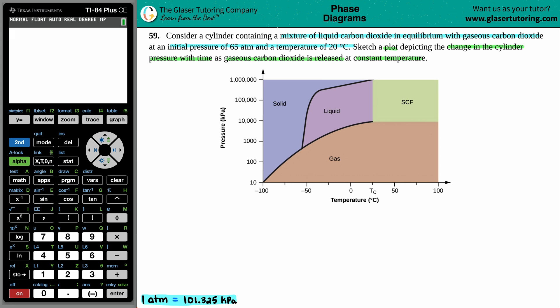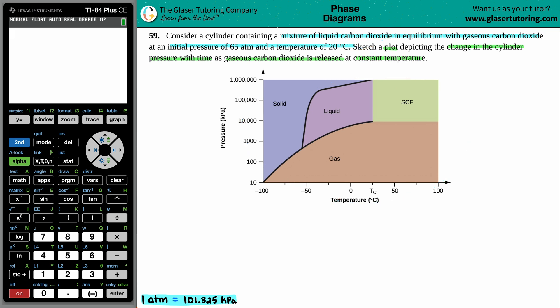So ultimately, what is the question asking for? We have to sketch a plot. It's not this plot right here because this is just a reference that we're going to get into. This is the phase diagram chart for the substance in question, which is carbon dioxide. But we have to at least start some type of sketch or a plot, which basically means a graph, so I'm going to make a graph.